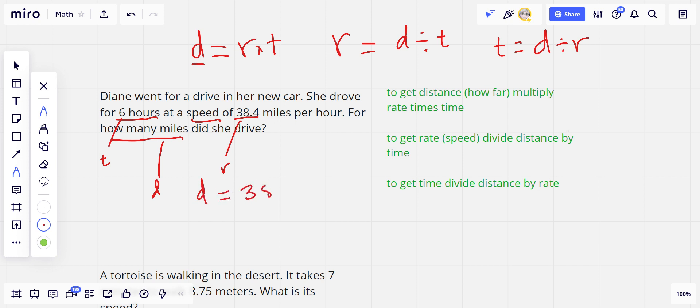So rate is 38.4, and time is 6. That's the trick with these - you've got to pick these out and then use the right formula. So 38.4 times 6. I'm just going to do the multiplication quickly here. 6 times 4 is 24. 6 times 8 is 48, 49, 50.